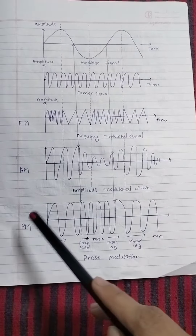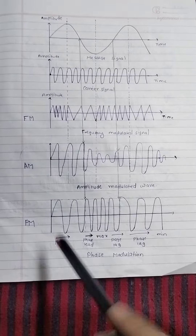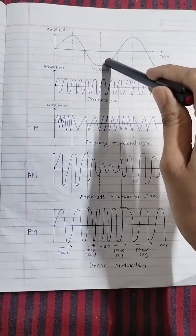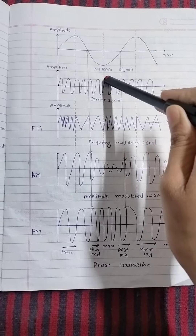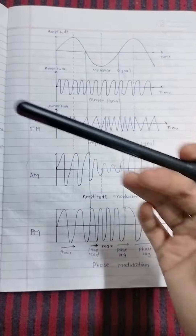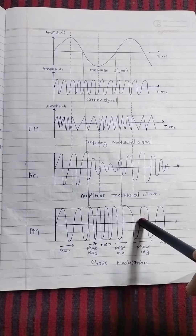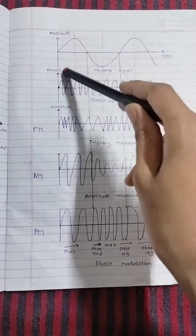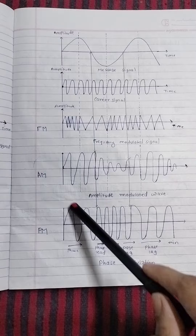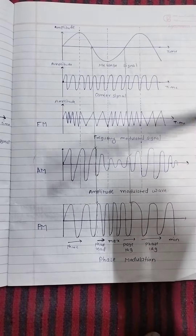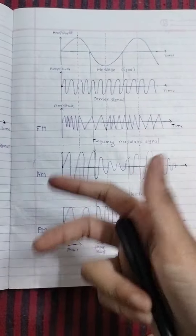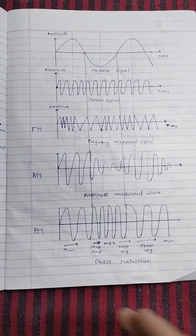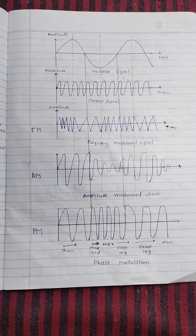In phase modulation, something different happens — the phase changes according to the original signal. The carrier signal changes its phase from 0 to 180 degrees. You can see here how the phase changes: when the signal goes high, the phase looks like this, and when it changes, the phase shifts 180 degrees, then back to zero degrees. That's all about AM, FM, and PM. If you like the video, please like it and subscribe to my channel.